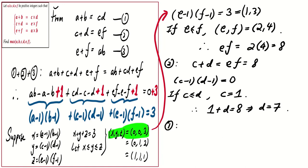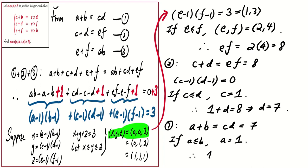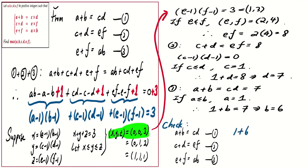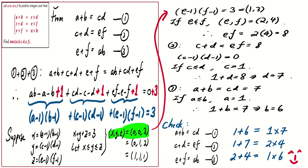From equation 1, a plus b equals c times d equals 7. Since x equals (a minus 1)(b minus 1) equals 0, one of a or b must equal 1, so a equals 1. Then 1 plus b equals 7 and b equals 6. We can do a quick check and verify that the values a equals 1, b equals 6, c equals 1, d equals 7, e equals 2, f equals 4 satisfy all three equations.